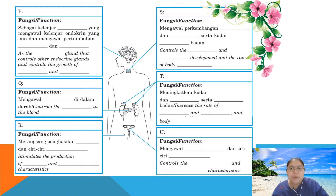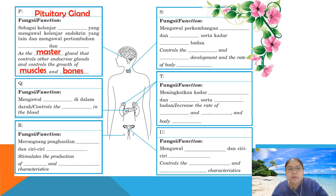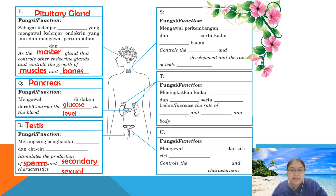Gland P is the pituitary gland — it is the master gland that controls other endocrine glands and controls the growth of muscle and bone. Gland Q is the pancreas, which produces insulin to control the blood glucose level. Gland R is the testis (for male), and its function is to stimulate the production of sperm and develop secondary sexual characteristics.